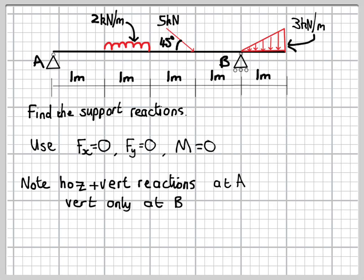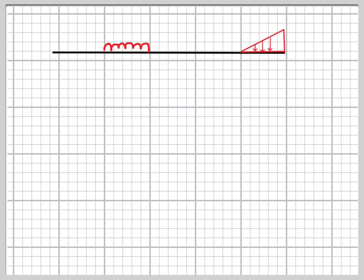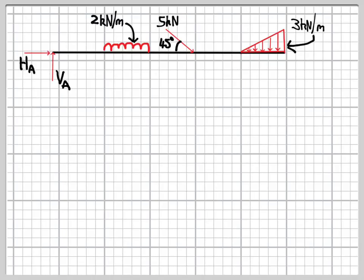So having noted that, we can draw a free-body diagram, which will look something like this. We have all the externally applied loads, and then the support reactions that we've just identified. Now it's the support reactions we need to find, so we're going to label them HA and VA for horizontal and vertical at A on the left hand side, and VB on the right hand side. And now we can apply the equations of equilibrium.